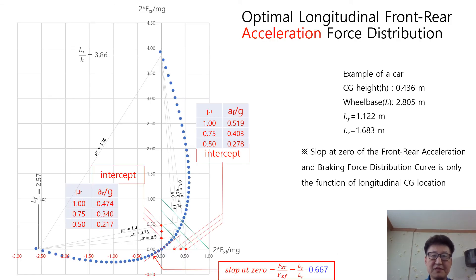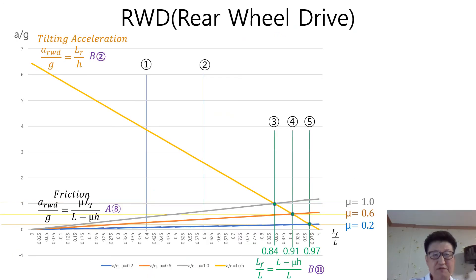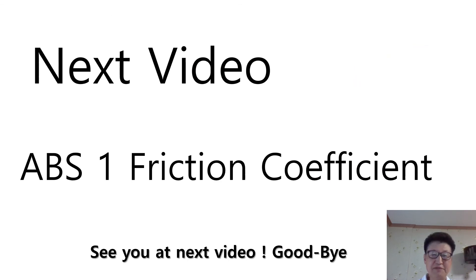The previous video will help you understand the next video coming soon. In the previous video, I explained the optimal longitudinal front and rear acceleration force distribution, together with constant friction lines, and how to obtain the maximum acceleration value using CG location data. Recently, I explained the process to calculate the minimum time from 0 to 100 km/h for all drive types: all-wheel drive, front-wheel drive, and rear-wheel drive. From the next video, I will kick off the ABS topic and explain everything about ABS. The first topic of the ABS series will be friction coefficient. See you at the next video. Goodbye, guys!